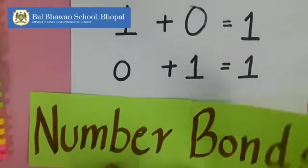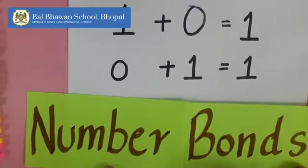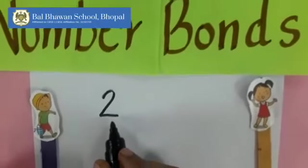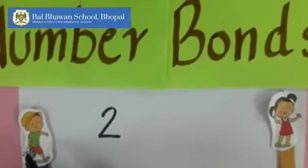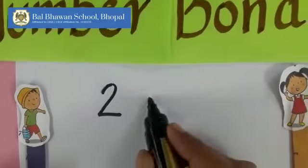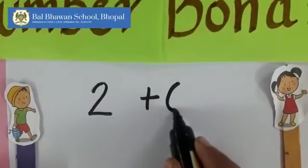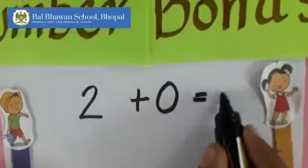And number bonds are also called addition facts. Now if they have two colors with them, Rohan can take two for some time and Rhea will have zero. How many in all? Two.